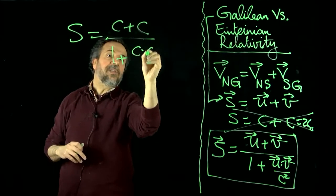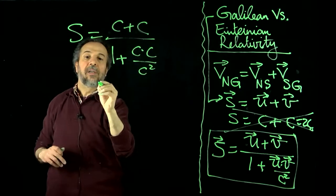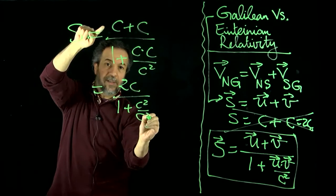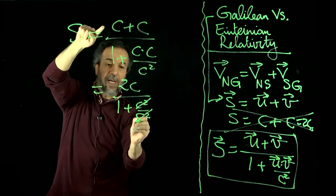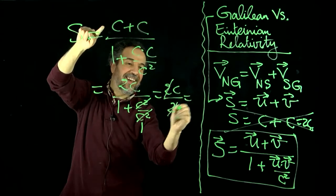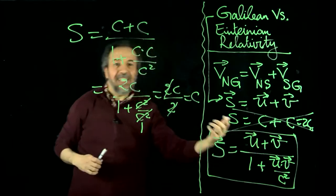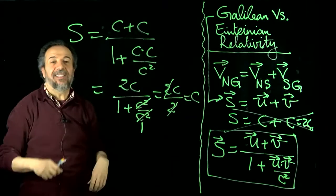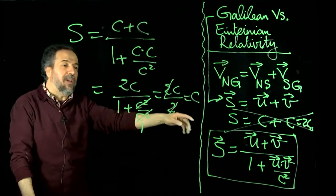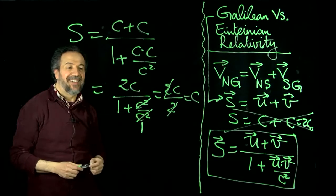1 plus, and then C times C, because I have U times V, so I have to multiply whatever is up here, and then divide it by C squared. Notice how this would give you 2C at the top, and then 1 plus C squared over C squared. Notice how C squared and C squared will cancel out, you end up with 1. Therefore, you end up with 2C over 2, and that's C. That's nice, which means that according to this, even if you go to the extreme case of imagining something that is moving at the speed of light, and you shine a light beam at the speed of light, the speed of light overall, for all observers, is going to be always C no matter what. That's sweet.